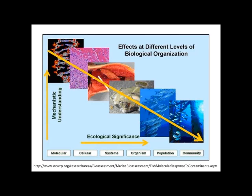Within ecotoxicology, we measure responses to chemical insults or chemical exposure — to pesticides and other contaminants — at different levels of biological organization: molecular responses, histopathology, whole organs, individuals, and what's happening at the population level and community structure. One of the main challenges is to link all these parameters and create a more predictive approach to tell us what could be happening at the population level when we measure genomic or histopathological responses.